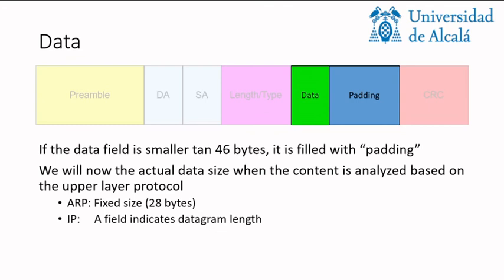How do we know the actual size? Because if we are filling it with random values how do we know what is the actual size of the data that we are sending? It depends on the protocol that we have in the upper layer. For example, in ARP we have always a fixed size of 28 bytes. So if the type says that we have ARP, it is very easy. We know that the data is 28 bytes.